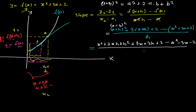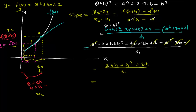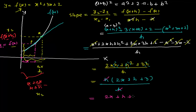Now let's cancel terms. The x² cancels with minus x², the 3x cancels with minus 3x, and the 2 cancels with minus 2. We're left with 2xh + h² + 3h, all divided by h. Each term in the numerator has an h factor, so we factor it out: h(2x + h + 3) / h. The h cancels, and we're left with 2x + h + 3.